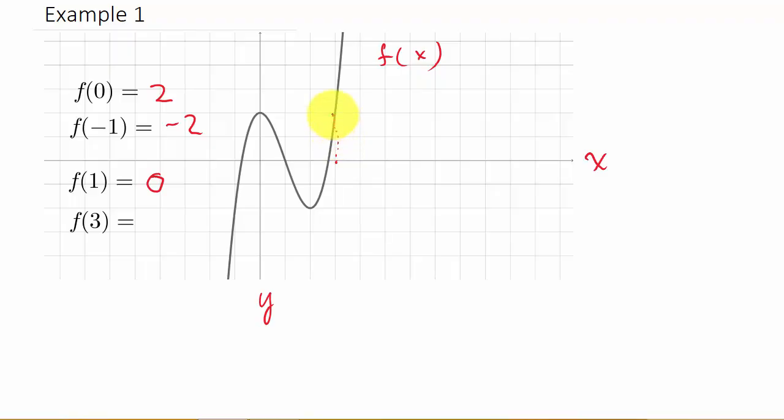And to hit the graph, we have to move up. You can see we move up until we hit the graph, and that's at a y-value of 1, 2. So f of 3 is 2.